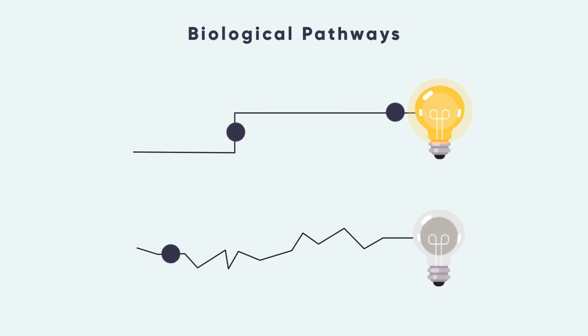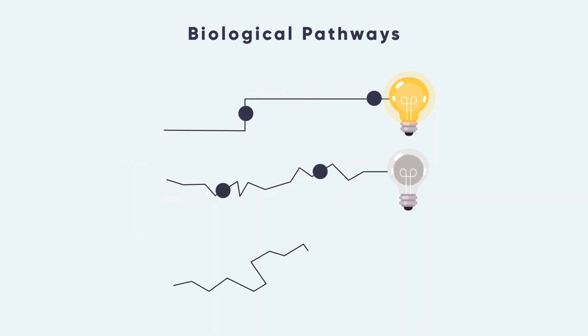Pathways are the biological processes the body needs to work properly. A person can have variants of small effect size. Individually, these variants might not be a problem.